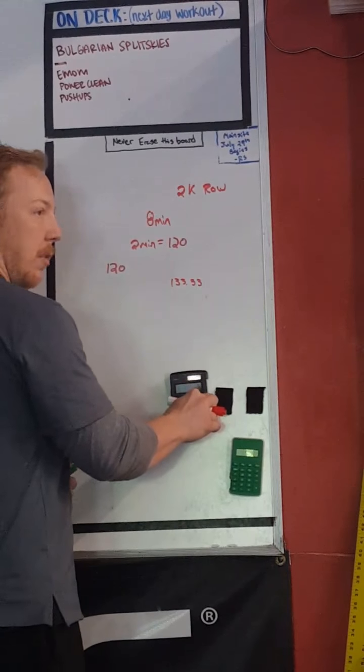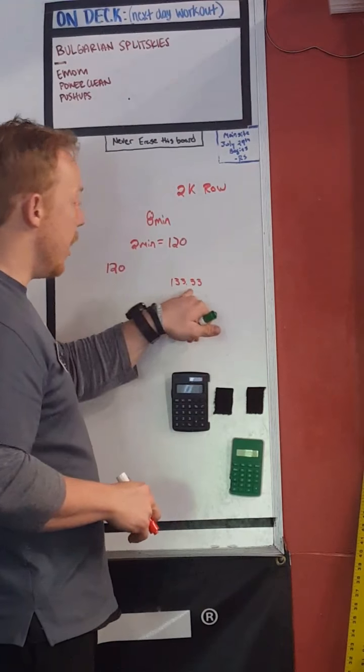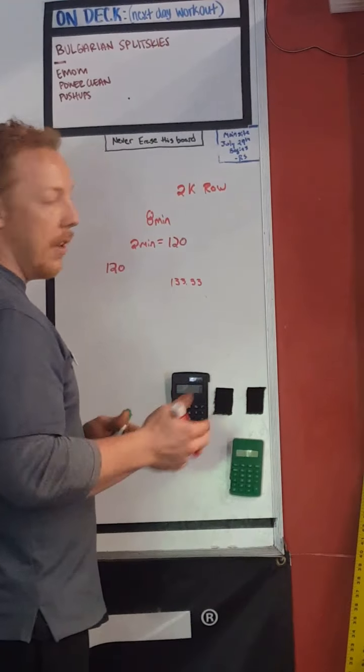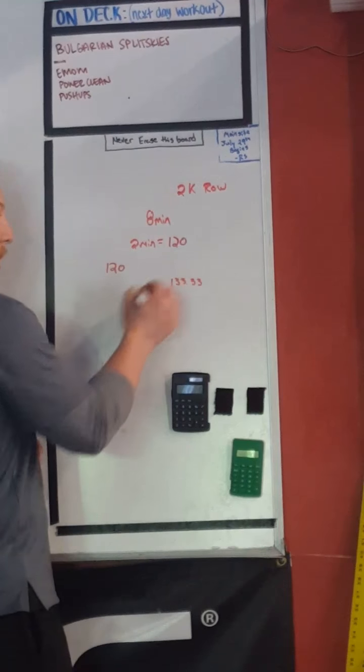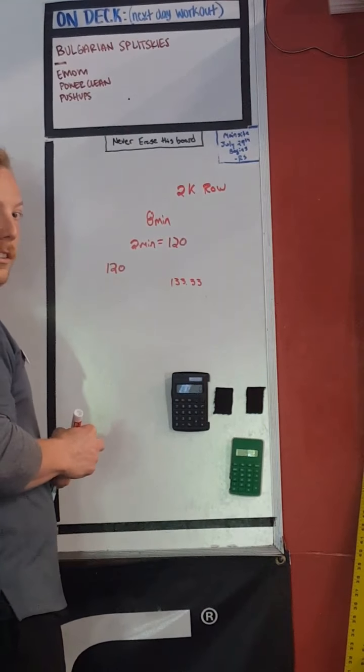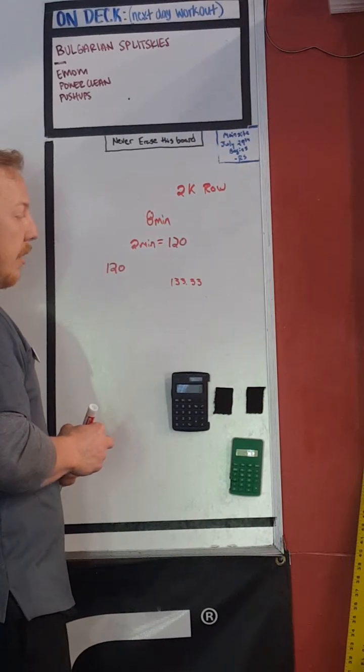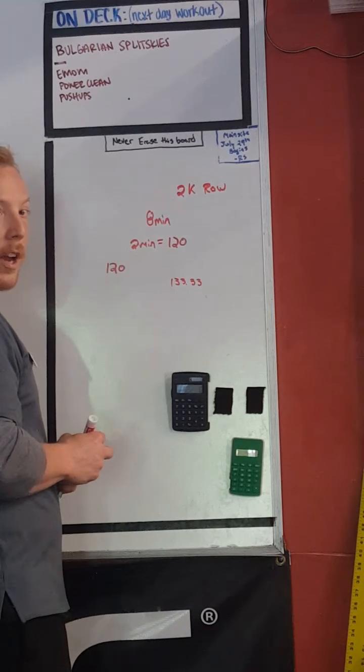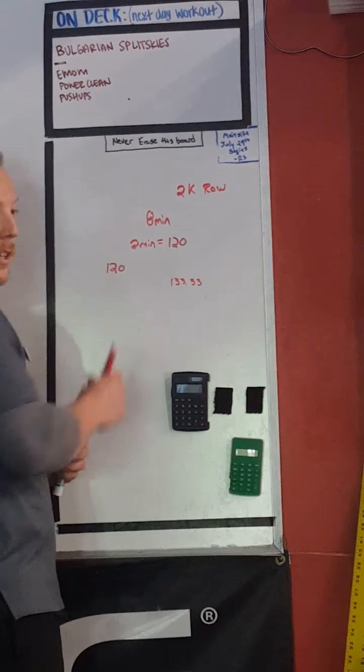We're always going to round up. It will be 134. What does that mean? 120 seconds is two minutes, and if it's 134, that means it's 14 seconds more than two minutes.